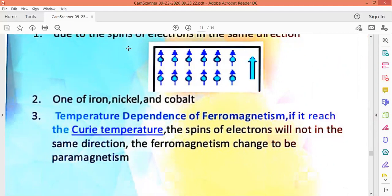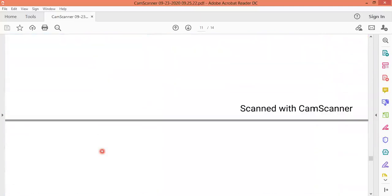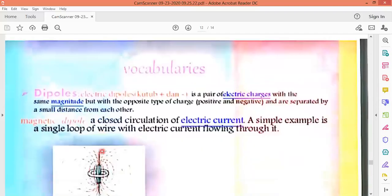Then, as I told you, when ferromagnetism reaches the Curie temperature, what happens? The spins, the direction is not like this anymore. The direction is changed, by which they lose the properties of ferromagnetism.